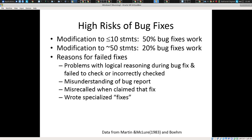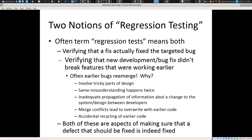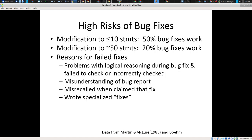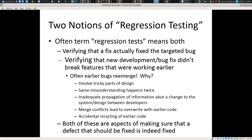There are many reasons for this — you wrote too specialized a fix, you didn't understand the bug report, you misrecalled that you thought you'd fixed it, there's a failure of reasoning. So in short, fixing bugs often introduces new bugs, and often it will introduce the same bug as was there previously or a very similar one.